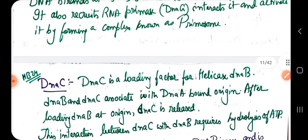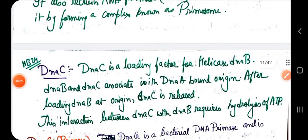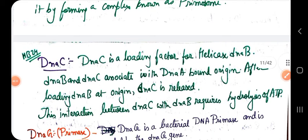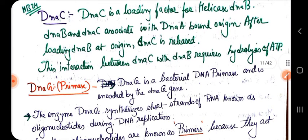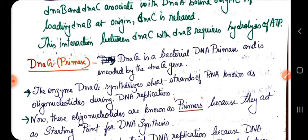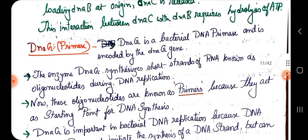Now I will discuss DnaG, which is your primase enzyme. Primase introduces small RNA primers. DnaG is the bacterial DNA primase, encoded by the dnaG gene. The enzyme DnaG synthesizes small RNA strands known as RNA primers — also known as oligonucleotides — during DNA replication.